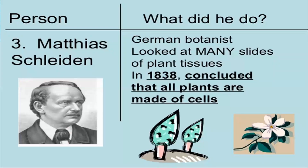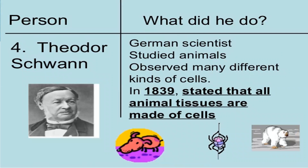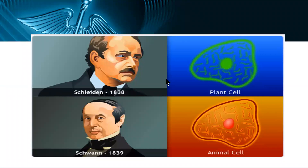Another key figure was Matthias Schleiden, a German botanist who looked at many slides of plant tissues. In 1838 he concluded that all plants are made up of cells. Another German scientist, Theodor Schwann, studied animals, observed many different kinds of cells, and stated that all animal tissues are made up of cells. Schleiden discovered the plant cell in 1838, and Schwann followed in 1839 with the discovery of the animal cell.